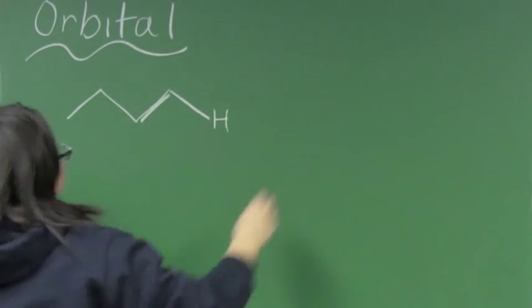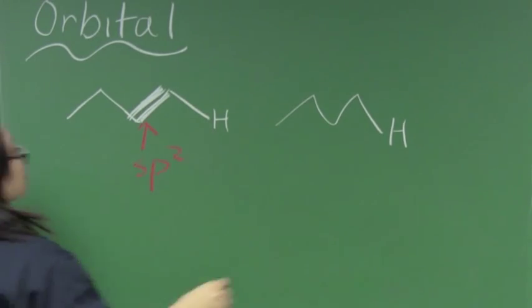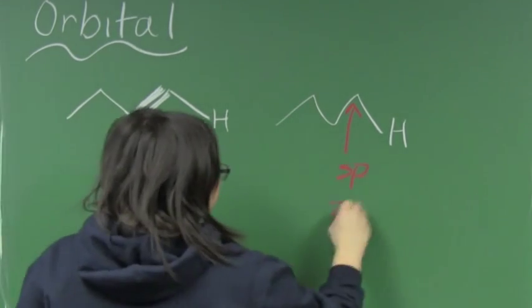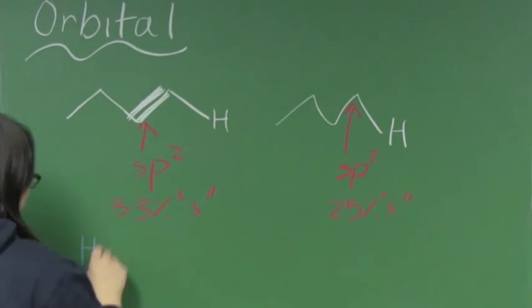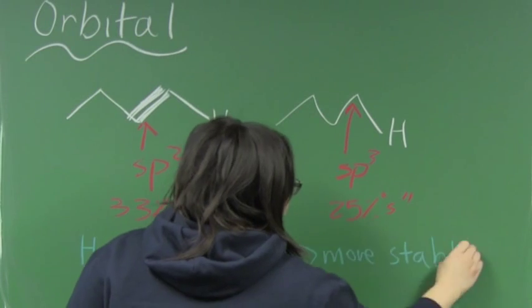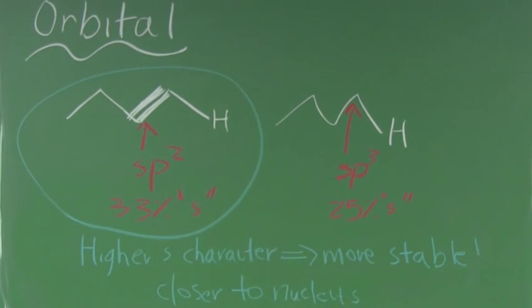If we look at our example, we see that the structure with a double bond has sp2 carbon, and the one on the right has sp3. Because of higher s character, the molecule on the left is lower in energy, and more stable.